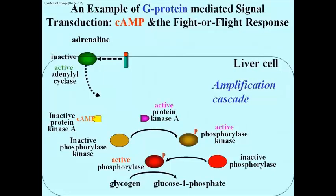One last note: the series of phosphorylations is called a phosphorylation cascade — more accurately, a phosphorylation amplification cascade — because a small amount of starting catalyst, protein kinase A here, can produce a large amount of active glycogen phosphorylase at the end of the cascade.